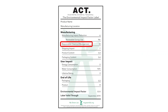In order to understand how to read this label, we're going to take one category as an example. We're going to look at responsible chemical management, which in essence asks the question: does the product contain any carcinogens, mutagens, or reproductive toxins, and then looks to see how the chemistry of the product is managed throughout the supply chain.